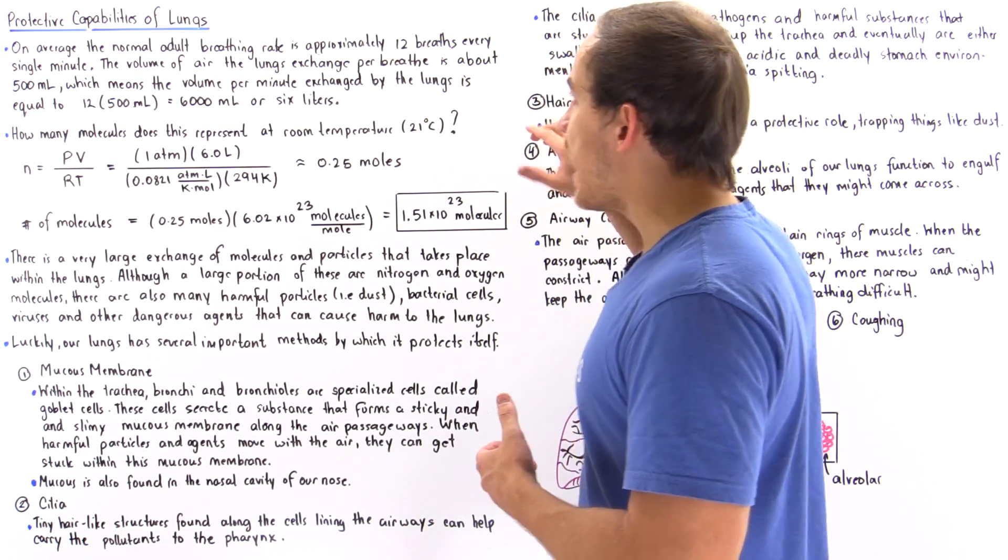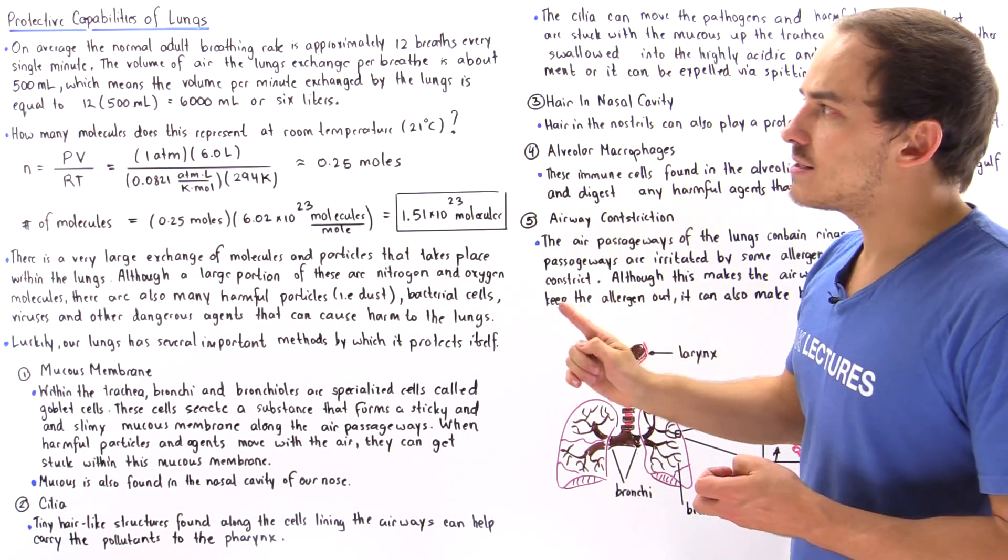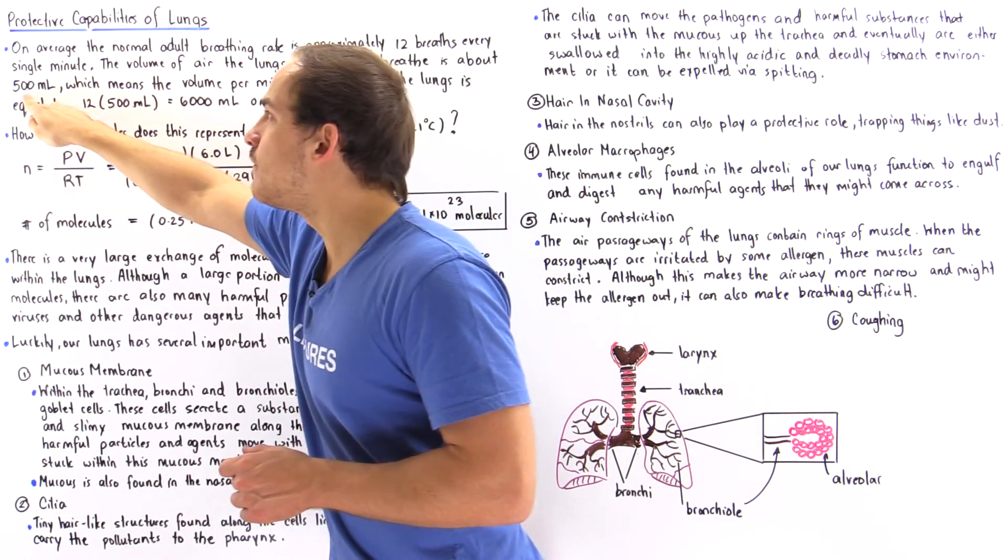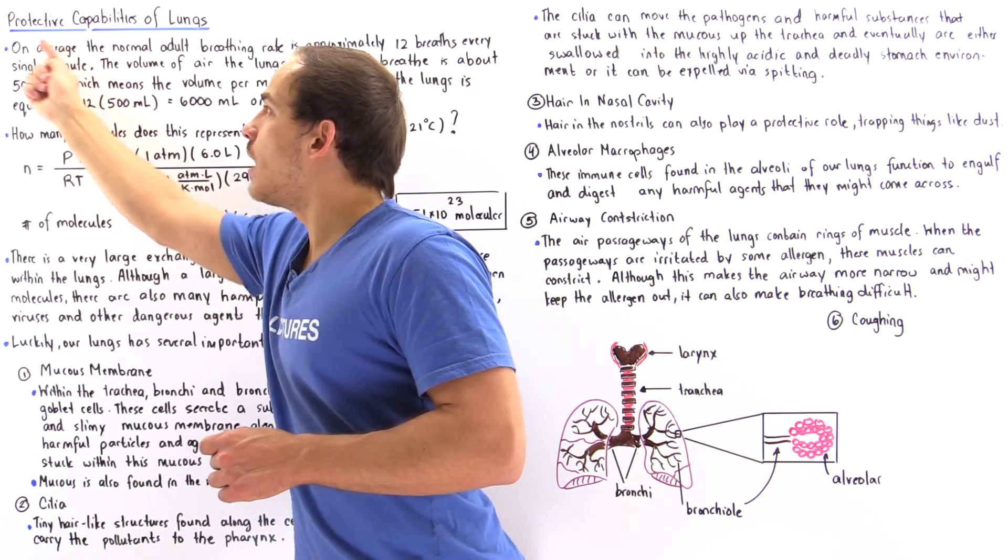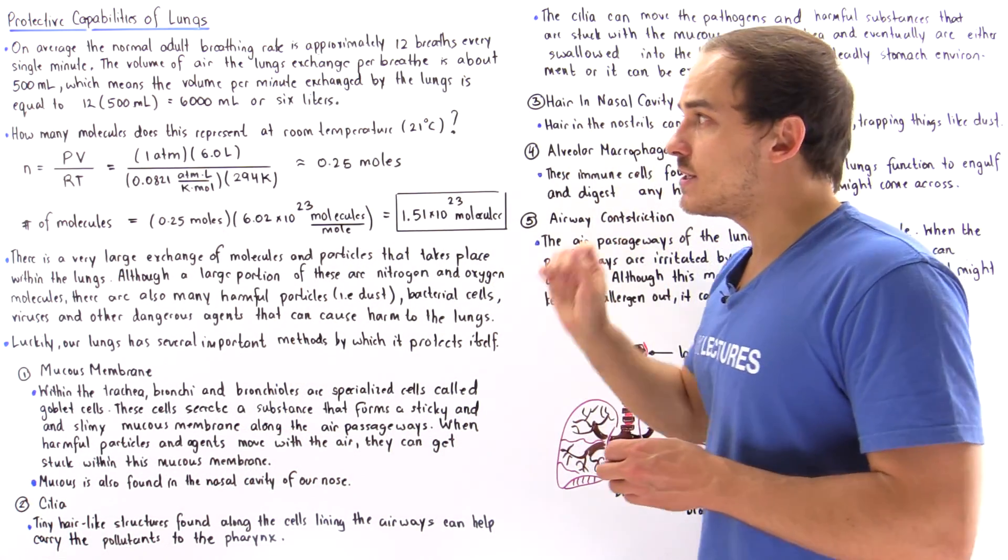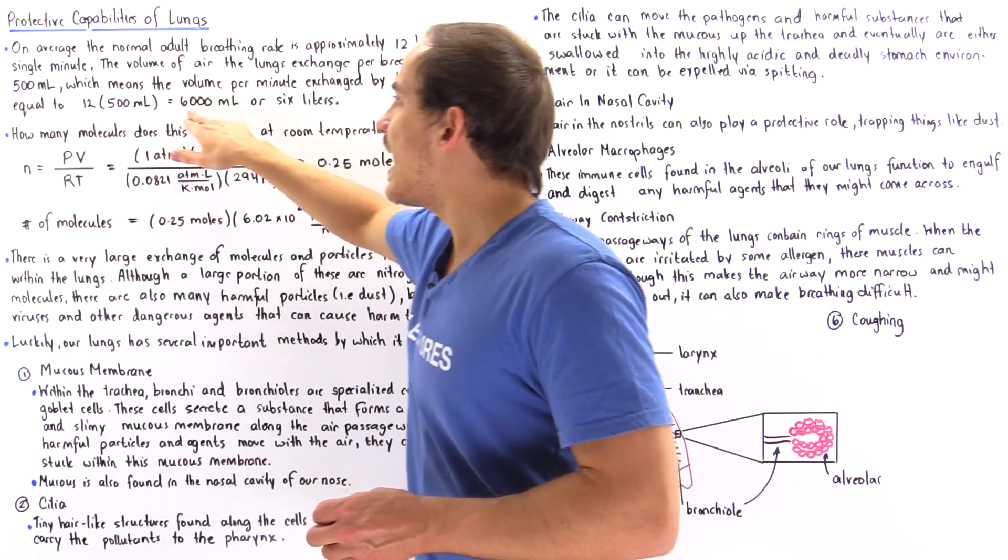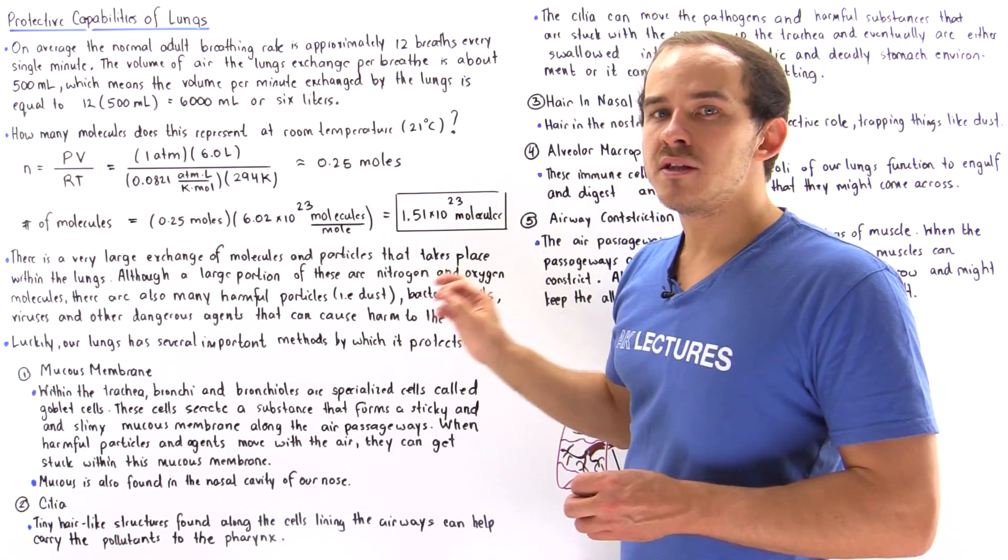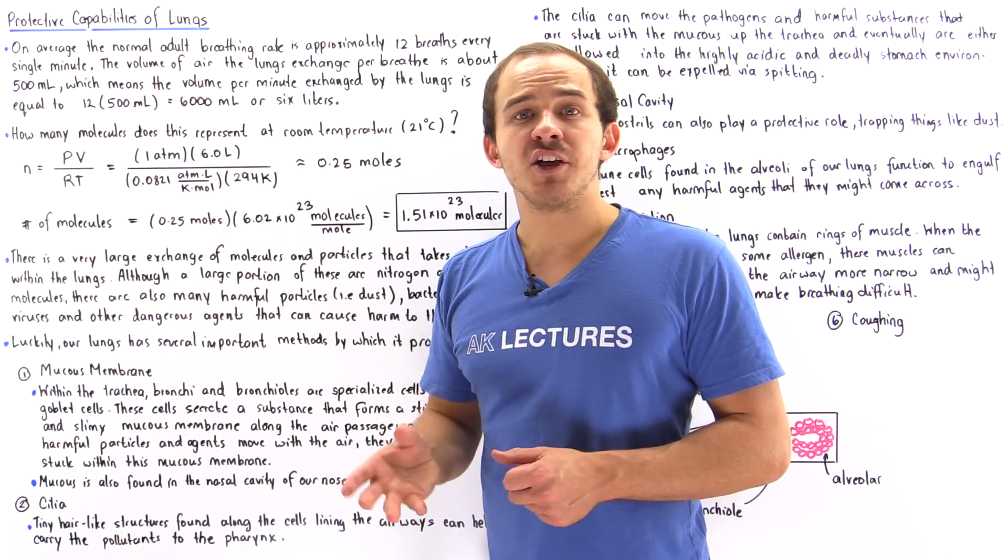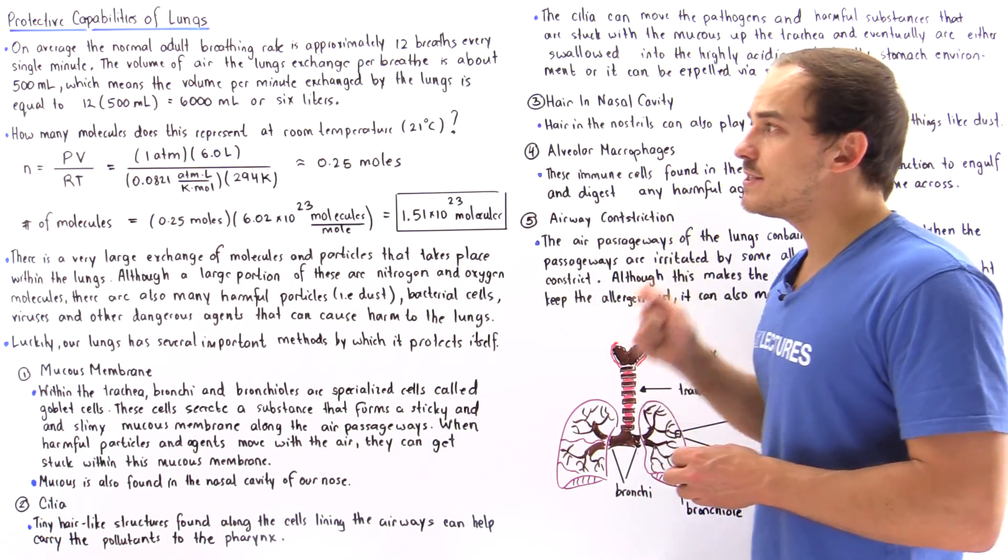If we take the number of breaths that are made by the resting individual every single minute and multiply by the tidal volume, the amount of volume that is exchanged by the lungs every single breath, we get 6,000 milliliters or six liters. This describes the total volume of air that is exchanged by the lungs every single minute.